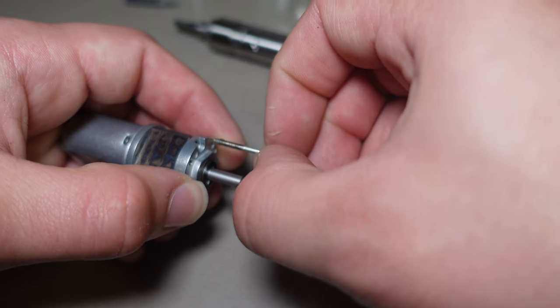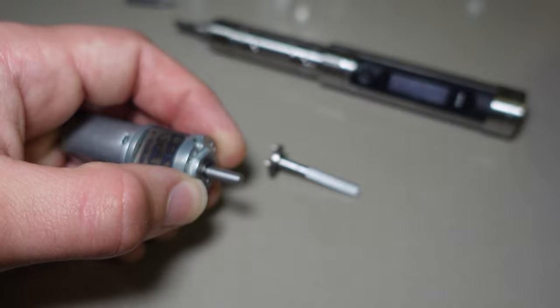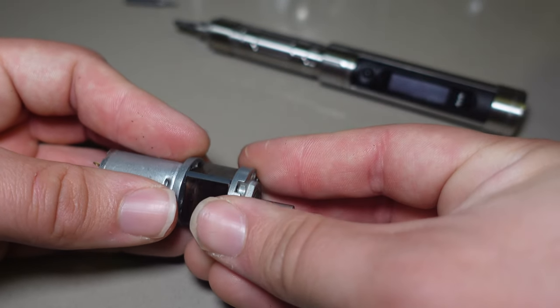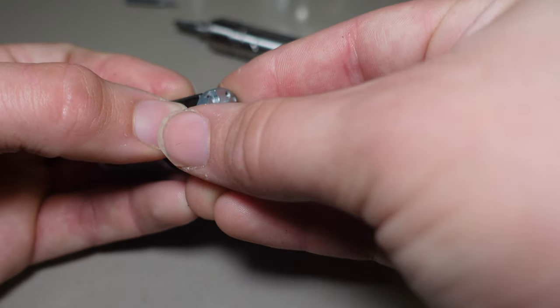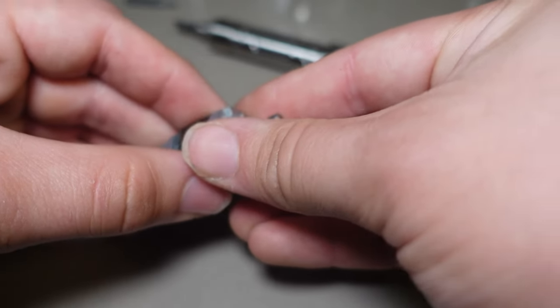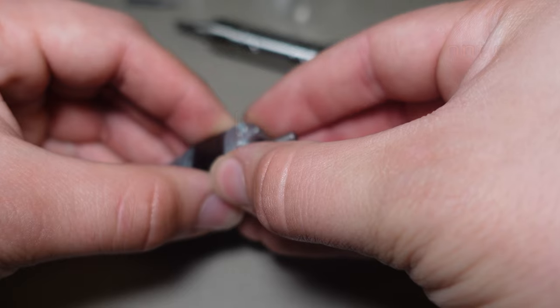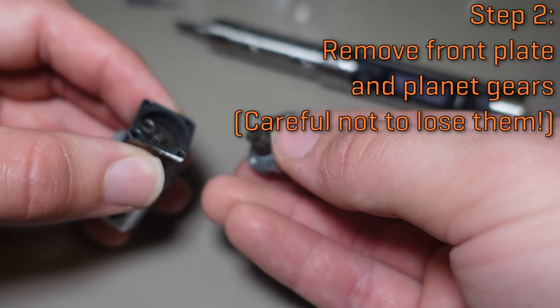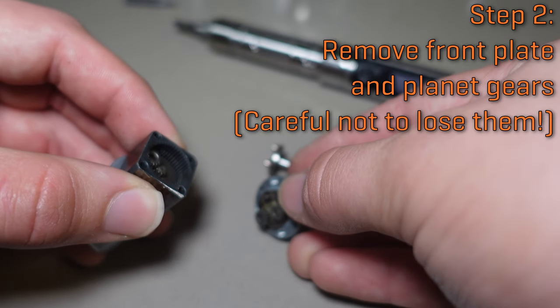Now, the ones that you will have in yours have pre-applied Loctite, but if you're disassembling the gearbox, it's usually a good idea to replace that Loctite when you reassemble it. So, I'm going to keep everything together except taking off the very front carrier plate, and you'll see maybe some or all of the planet gears will come out with it. That's okay.